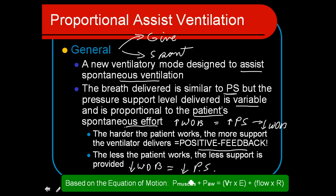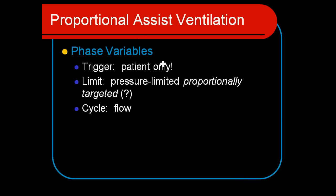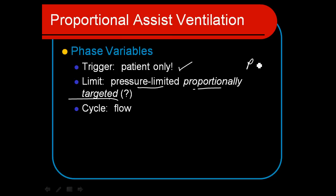Based on the equation of motion, increased work by the muscles is going to give you more inspiratory support. The ventilator picks up the patient's inspiratory effort — it's pressure limited but proportionally targeted, meaning the pressure limit varies depending on the patient's workload. It has a few ways of measuring that, and something called the P0.1 is one of them, where it measures the amount of inspiratory force generated by the patient. It is flow-cycled, just like pressure support, because in fact it is pressure support with an intelligent computer overriding system built into it.